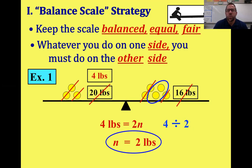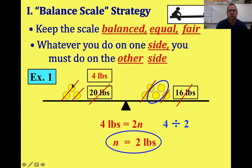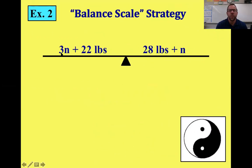The key in the balance scale strategy: stay fair and balanced — whatever you do on one side, you do on the other side. Let's try another example. Here we have a variable on both sides: three nuggets (3n) on the left and one nugget (n) on the right. We also have 22 pounds on the left and 28 on the right, so we can take 22 pounds off both sides.